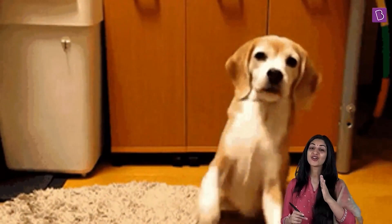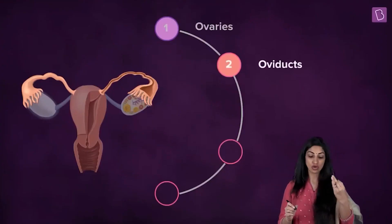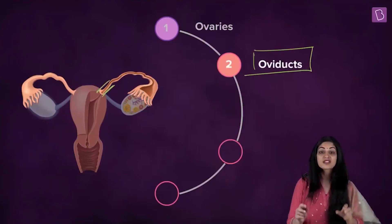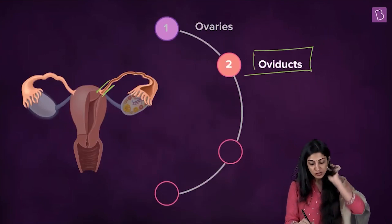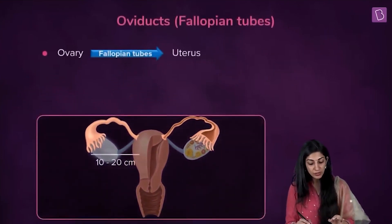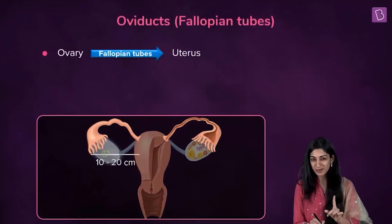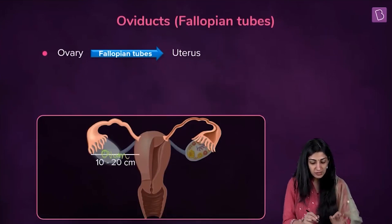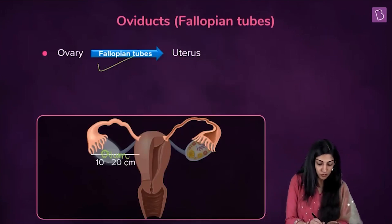Who will catch the ovum? We have the ducts to catch the ovum, called oviducts or fallopian tubes. The ducts which are going to carry the egg — the ovum produced here — these ducts are going to carry it. Those are called fallopian tubes and they connect the ovary to the uterus.